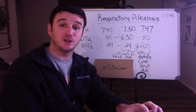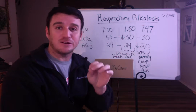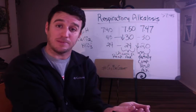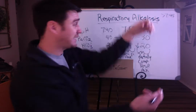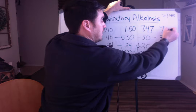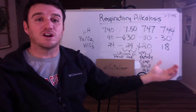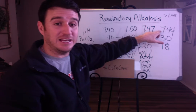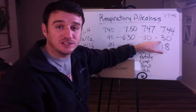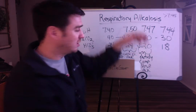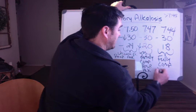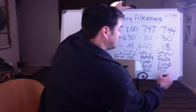It's partially compensated because the bicarb has moved, but the pH is not yet fully compensated back into normal range. From here, the bicarb will continue to drop, continuing to bring the pH back down. So CO2 stays at 30, bicarb goes to 18, pH comes to 7.44. Now we have a fully compensated respiratory alkalosis — pH is back in normal range, compensated by a drop in bicarb.